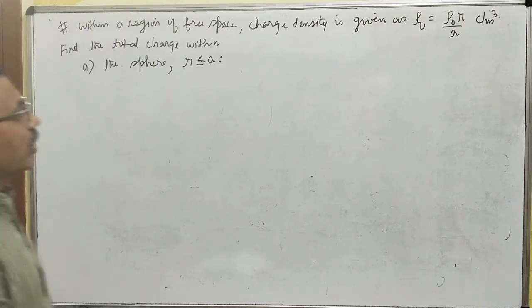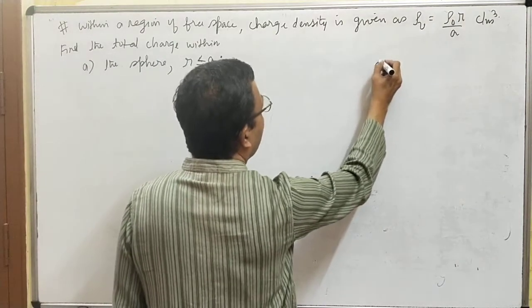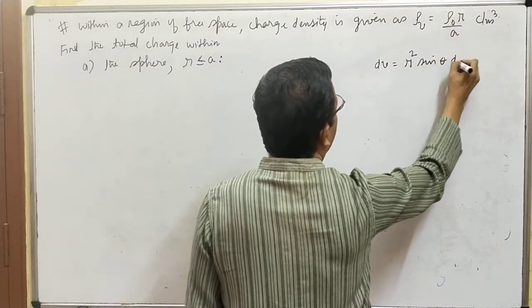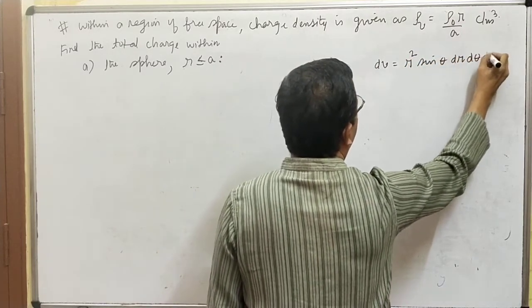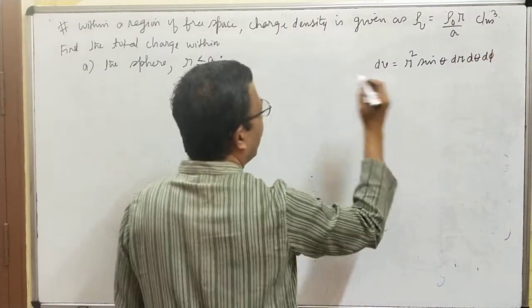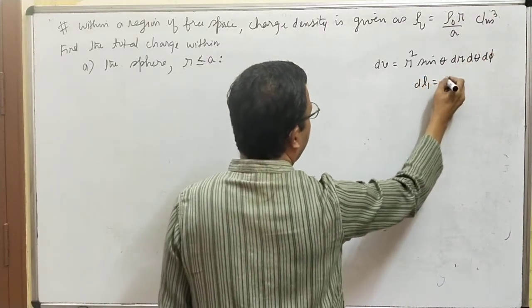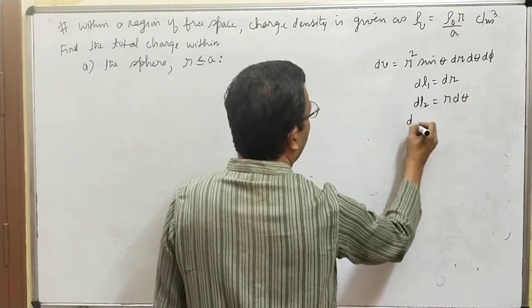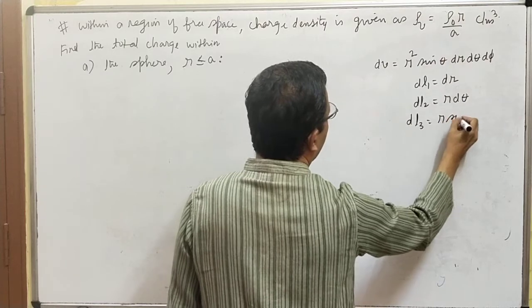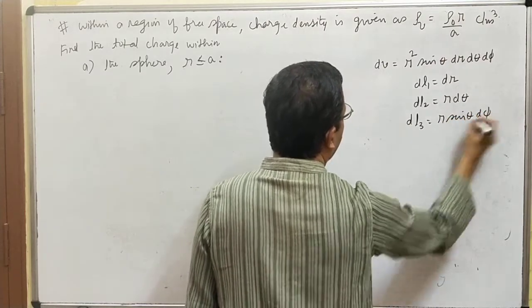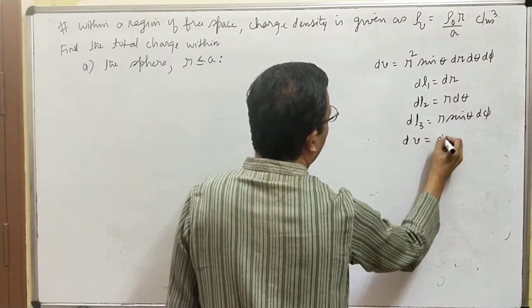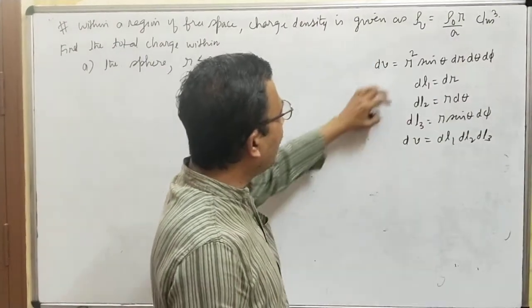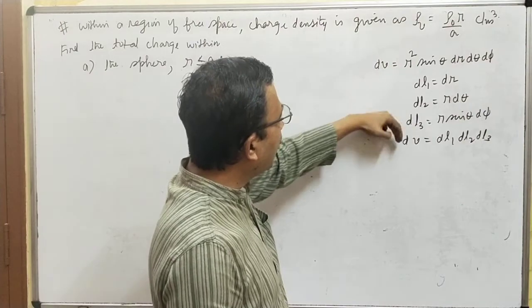What is dV in a spherical coordinate system? dV = r² sinθ dr dθ dφ. Please remember: dl₁ = dr, dl₂ = r dθ, dl₃ = r sinθ dφ. dV is dl₁ × dl₂ × dl₃. Don't memorize the dV expression directly — remember dl₁, dl₂, dl₃ and multiply them.